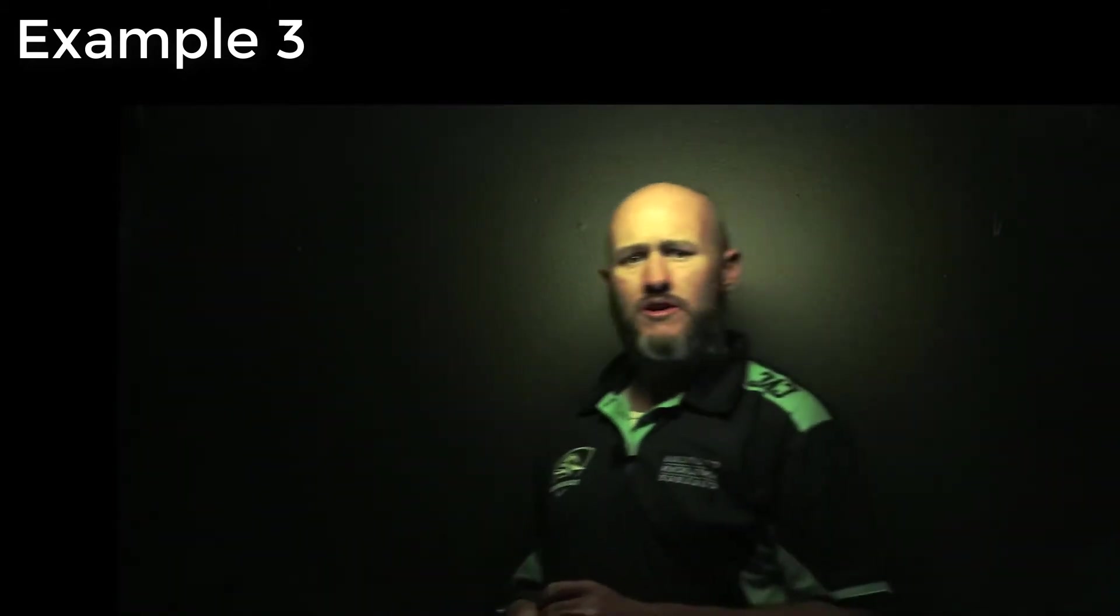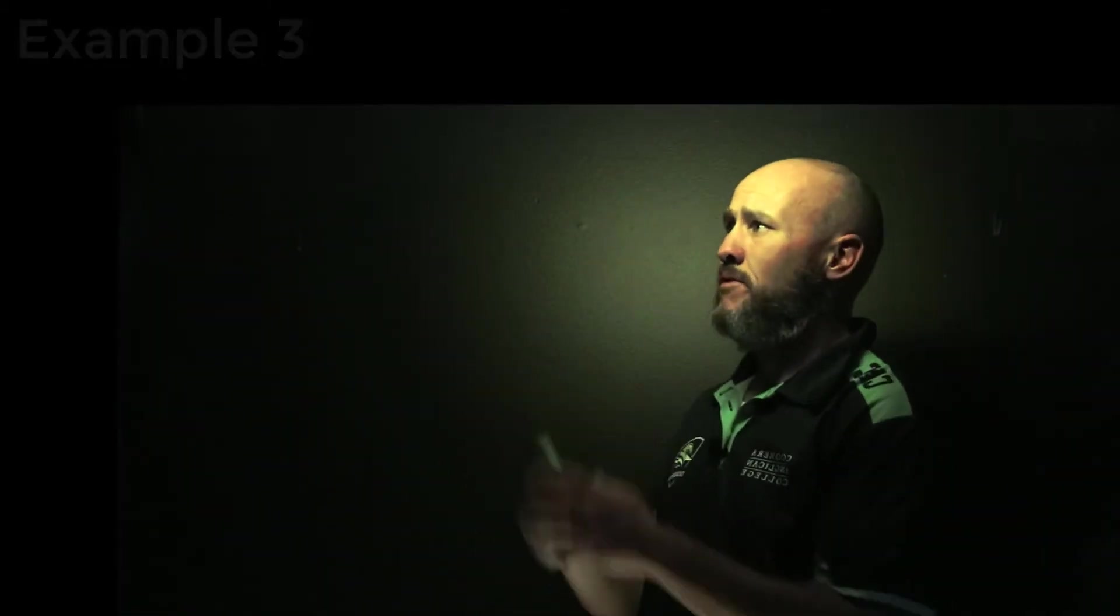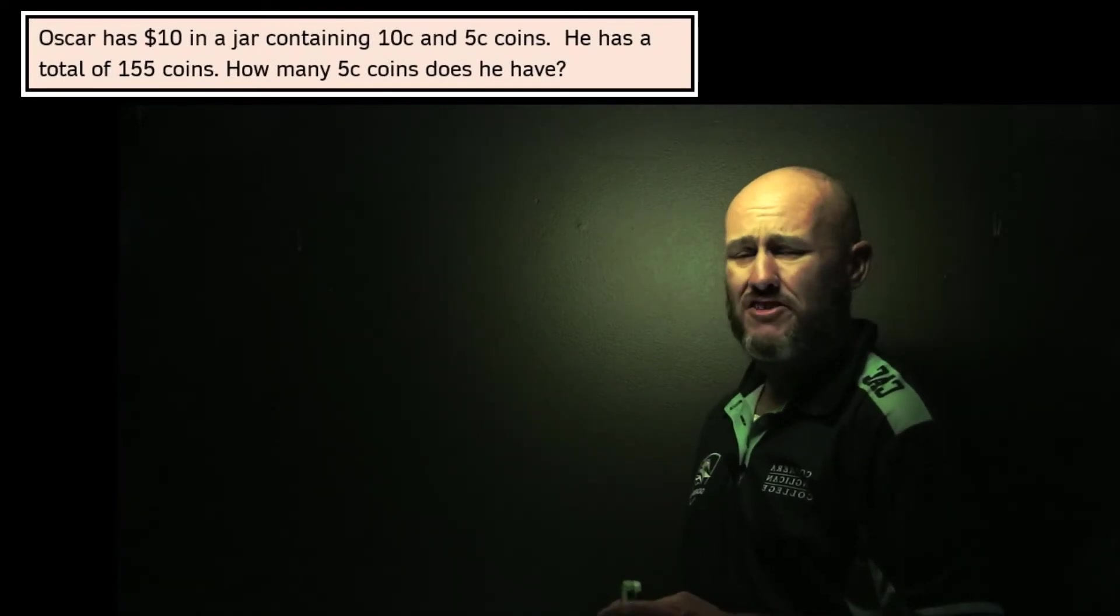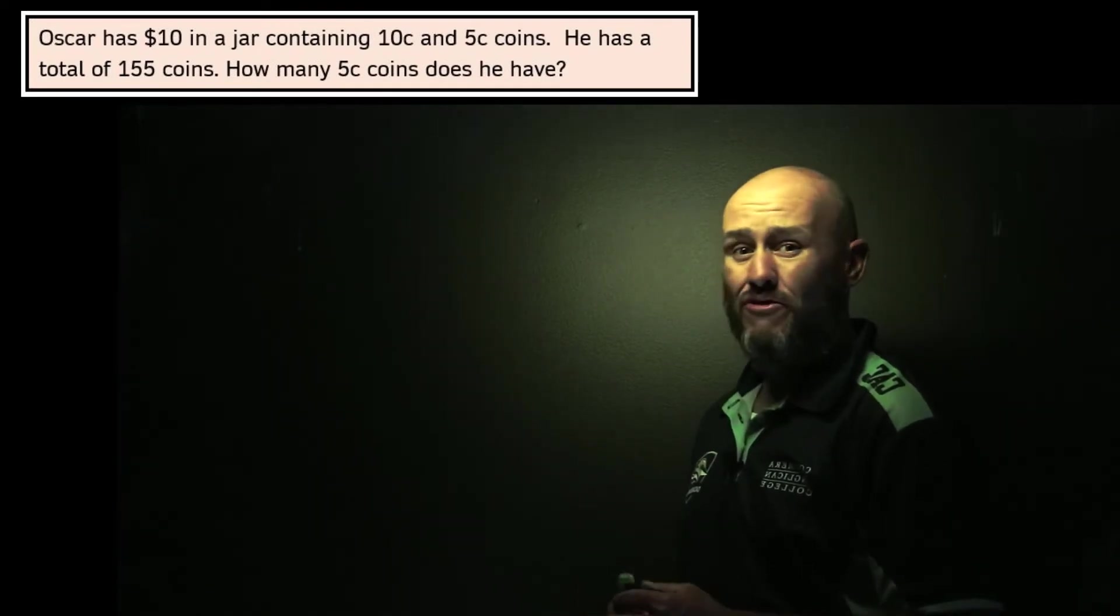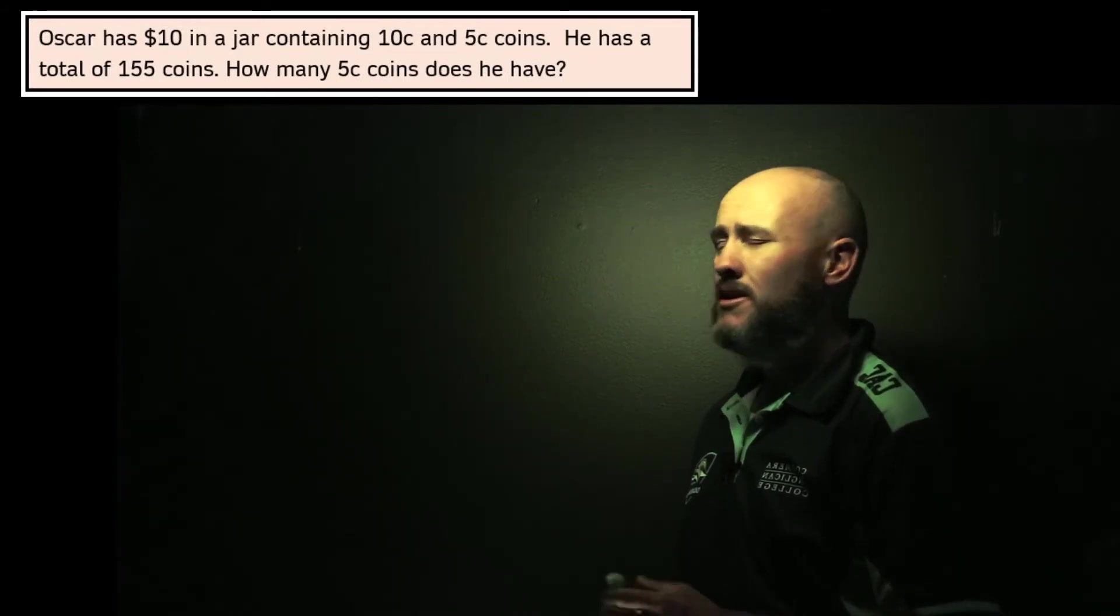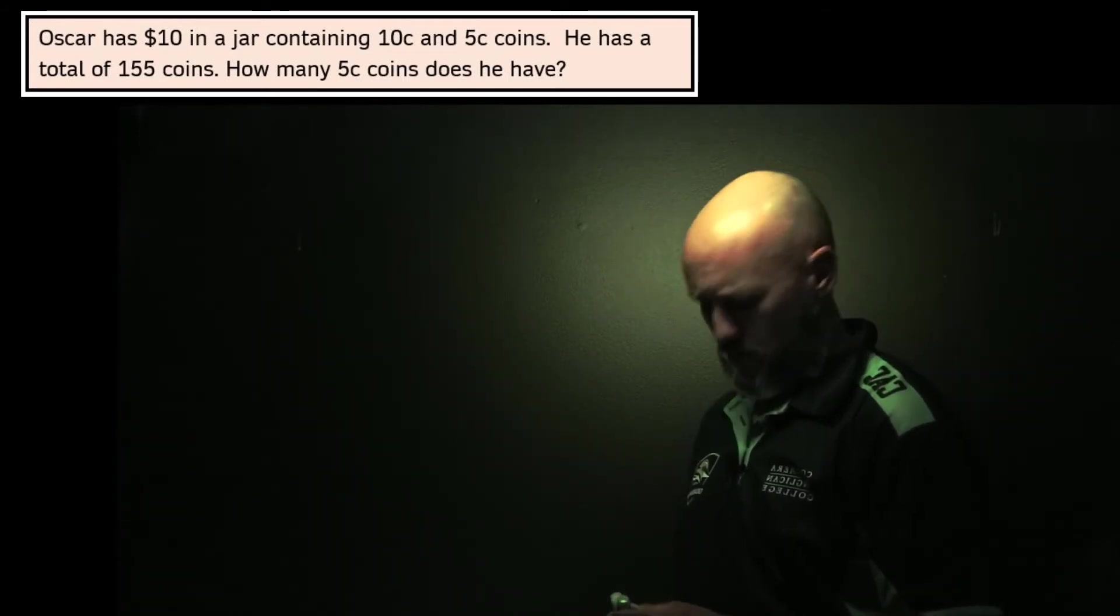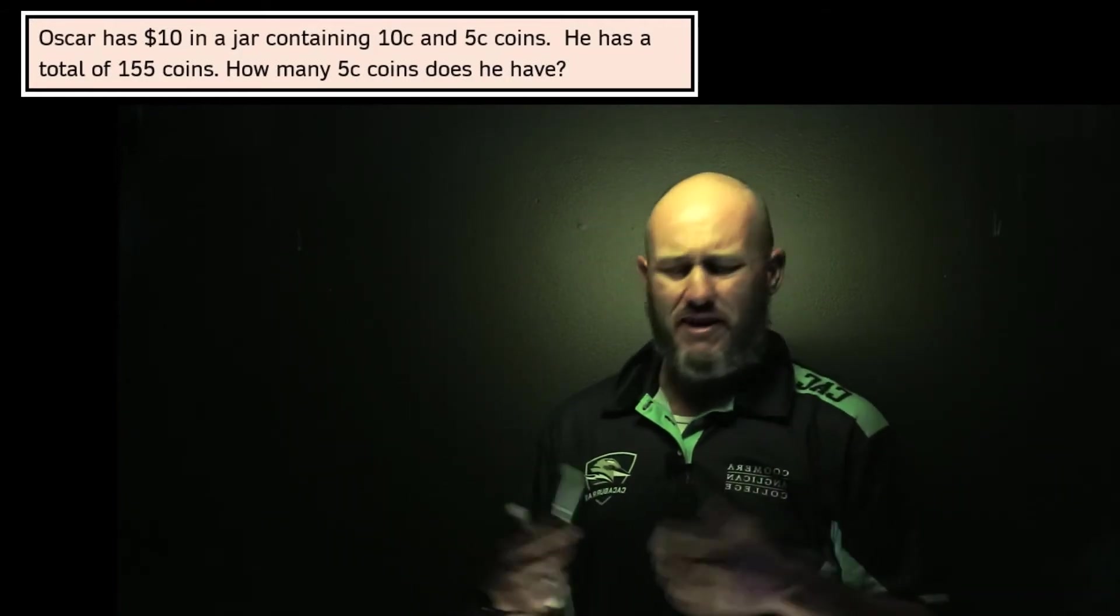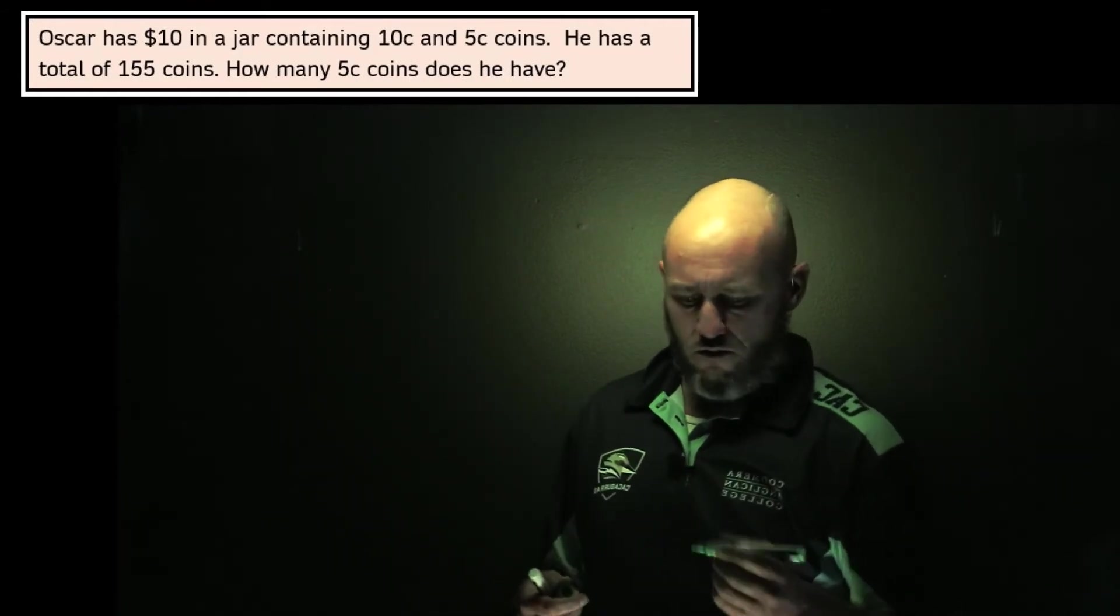And for our third example, we have this. Oscar has $10 in a jar in 5 cent and 10 cent coins. He has 155 coins. How many 5 cent coins does he have? Okay, so this one is actually a little bit harder to interpret, but mathematically still not too bad.